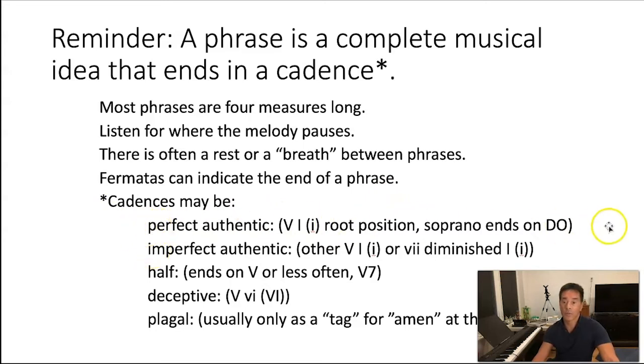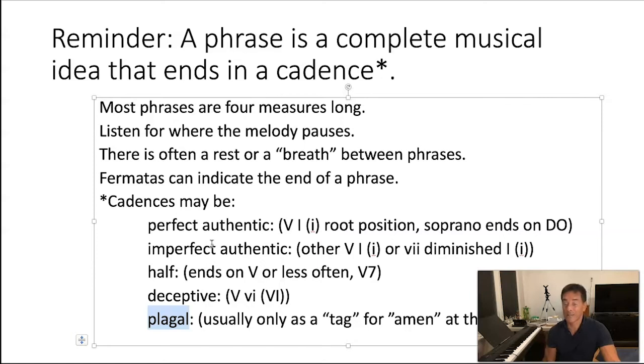As far as the cadences go, this is just a reminder of what they are. Perfect authentic. So, five, one in root position with a soprano ending on do. Imperfect authentic. Anything else, five, one inverted, or soprano not ending on do, or a diminished seven going to one. Half ends on five. Deceptive ends on six. Five going to six. Anything that has the leading tone and then doesn't go to one is pretty much deceptive. Plagal. It's not really used for cadences. You see this chord progression. This is the only other chord that normally goes to one, and that's the four chord in major. But that's the amen cadence. We call it plagal. But you wouldn't normally end a phrase with four ones. It's pretty weak. And why is it weak? Well, there's no leading tone. Composers did not use that for ending a piece or a big section.